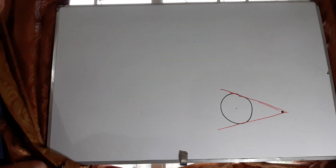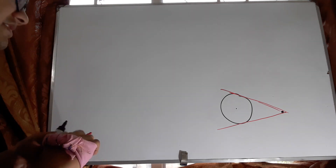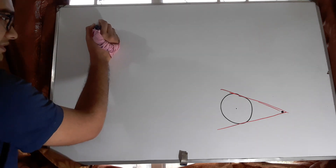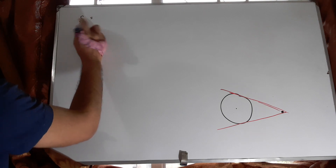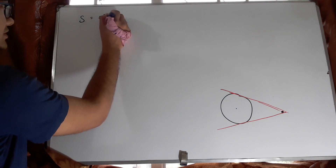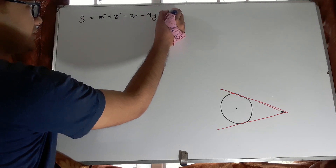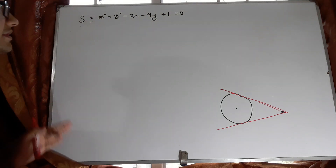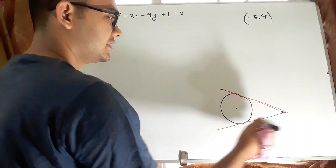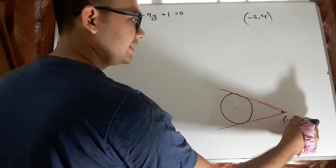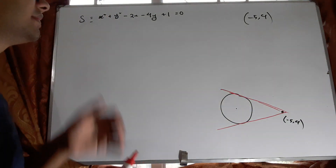Let's get started. Some of you have complained about the sound quality — I'll be trying to raise my voice as much as I can. The given equation of the circle is x squared plus y squared minus 2x minus 4y plus 1 equals 0, and the given point is minus 5 and 4.